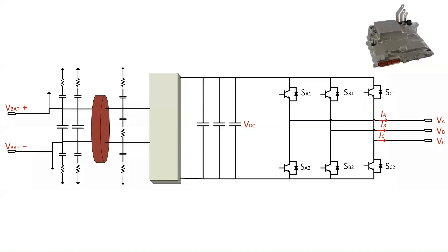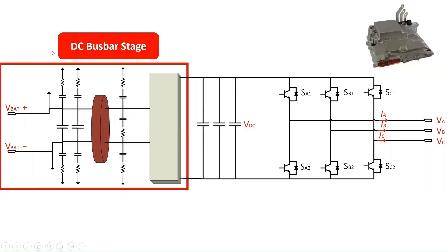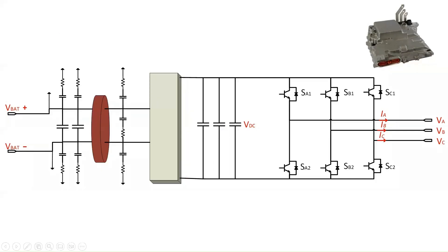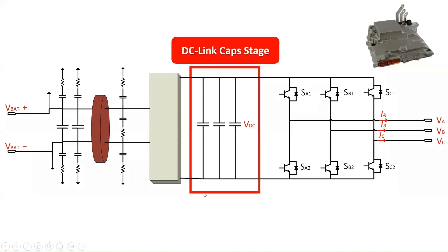The inverter consists of three stages. The first is the input stage, which outputs a DC voltage from the battery pack and consists of several capacitors and EMI filters. The second stage is the DC-DC conversion using a DC link capacitor, which filters and smooths out the DC voltage in the DC bus rails. The DC link must balance the fluctuating instantaneous power that results as a ripple generated by the IGBT stages.